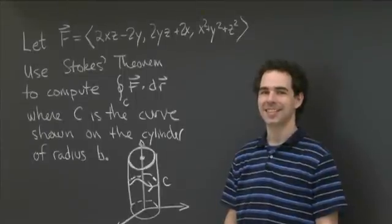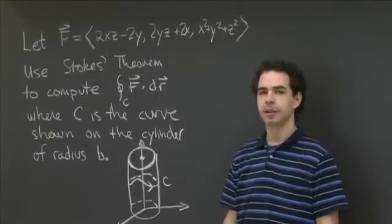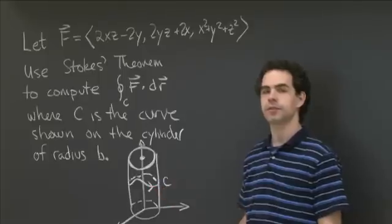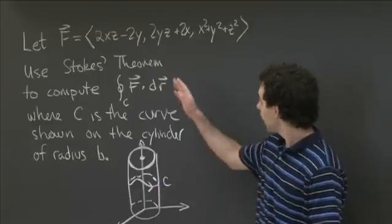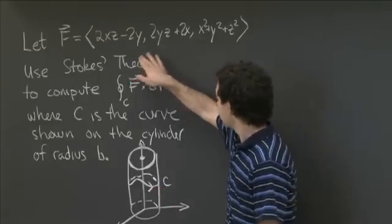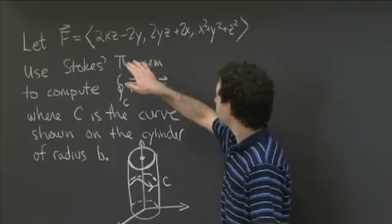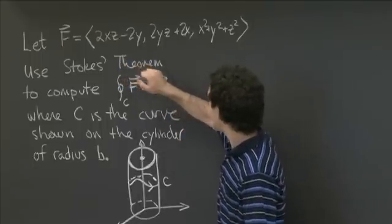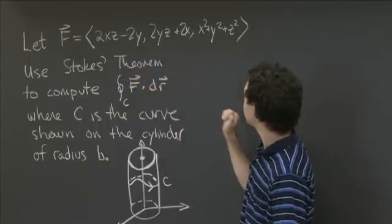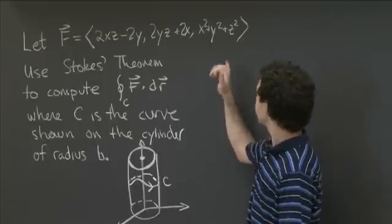Welcome back to recitation. In lecture, you've been learning about Stokes' Theorem, and I have a nice exercise on Stokes' Theorem for you here. I'm going to let F be this field: 2xz minus 2y, 2yz plus 2x, and x squared plus y squared plus z squared.